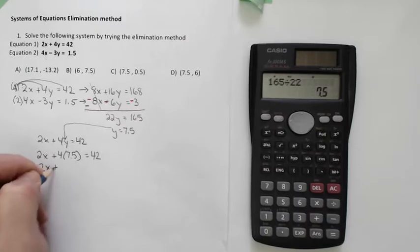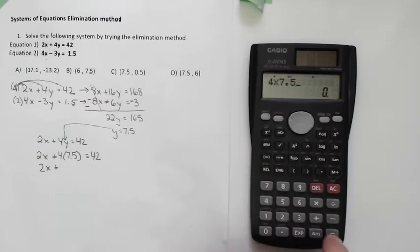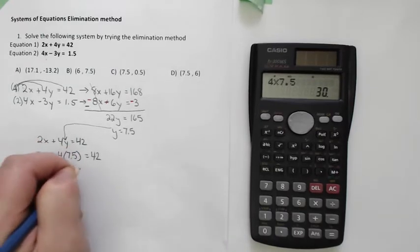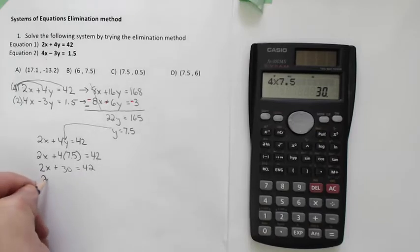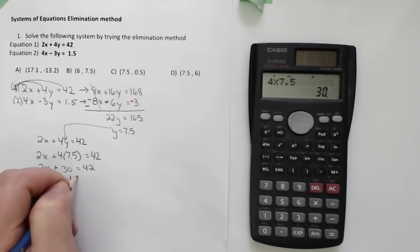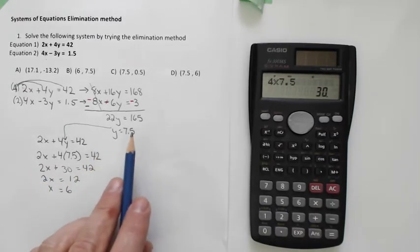So 2x plus 4 times 7.5, I think it's 30. There it is. Is equal to 42. Subtract 30 from both sides. And now divide by 2. And x is 6. So the x is 6 and the y is 7.5.